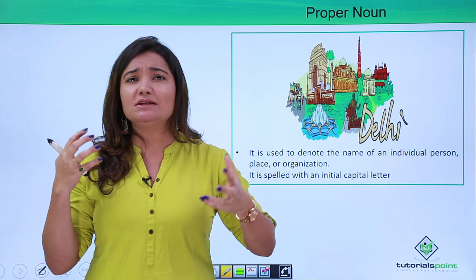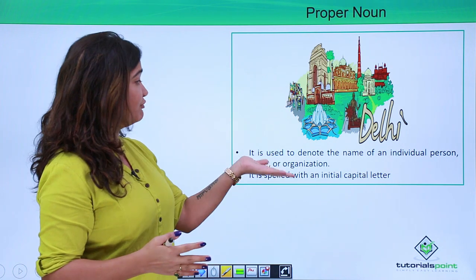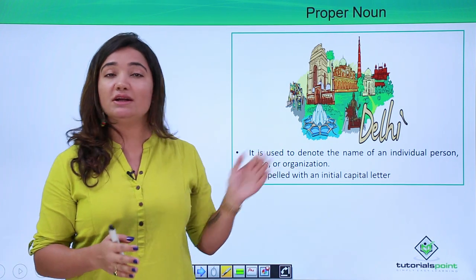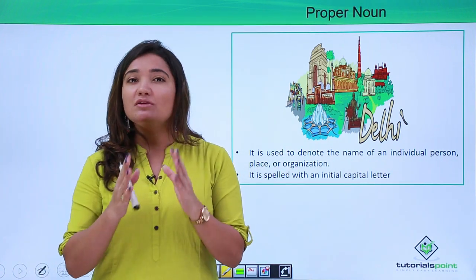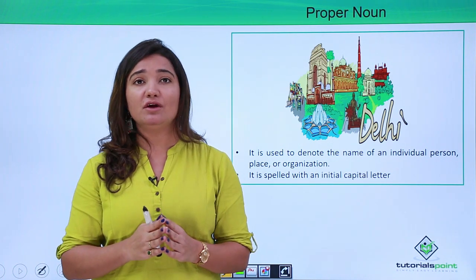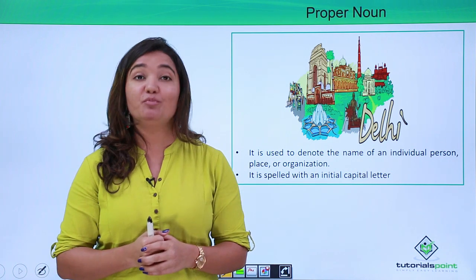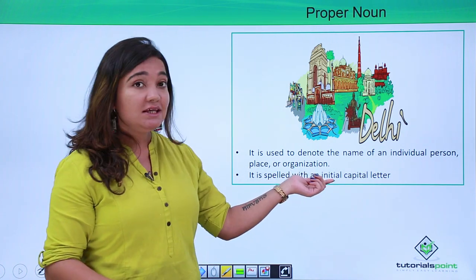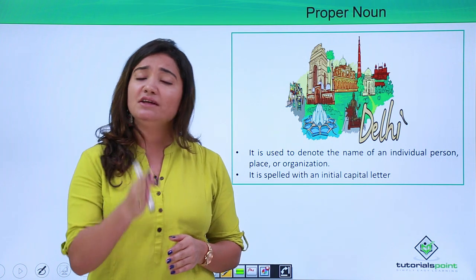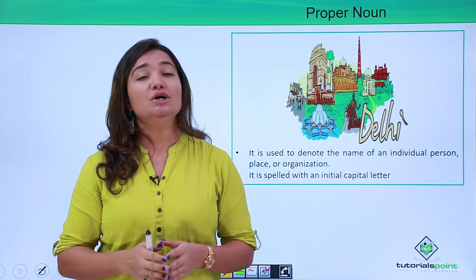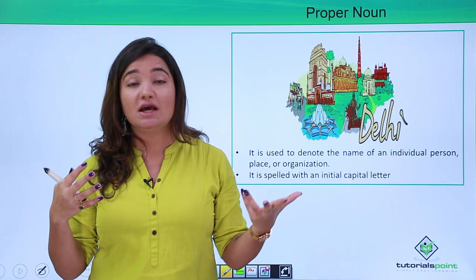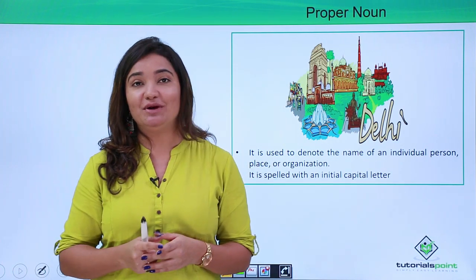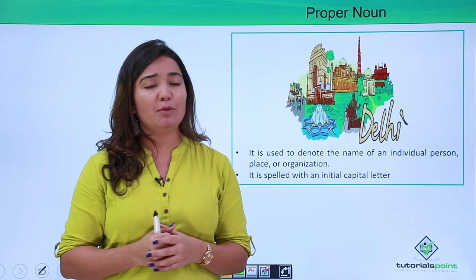If you read the definition of proper nouns, it is used to denote the name of an individual person, place, or organization. What is really special about proper nouns is that they are very specific — they have an identity of their own. And one very important thing: whenever proper nouns are written, their initial letter is always capital.